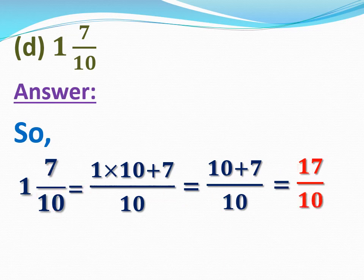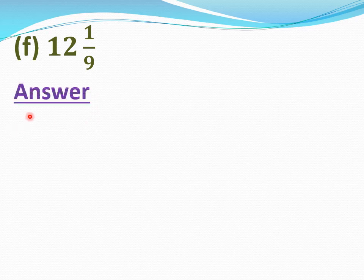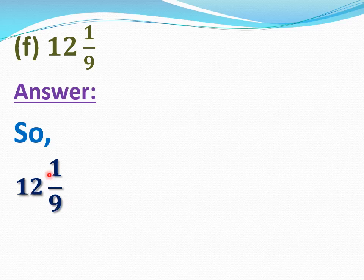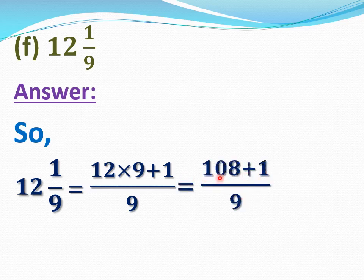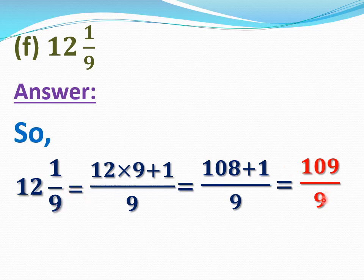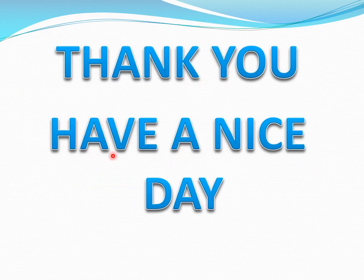Now E part, 12 whole 1 by 9. So 12 whole 1 by 9 equal 12 multiply 9 plus 1 by 9. 12 multiply 9 equal 108; 108 plus 1 equal 109. So write 109 by 9. 12 whole 1 by 9 equal 109 by 9. These were the solutions of lecture number 2. Kindly subscribe our channel and like our video. Thank you. Have a nice day.